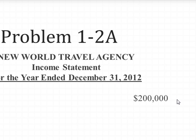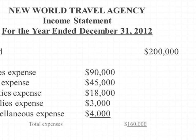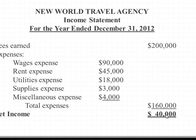If there were any other revenue accounts, we would list those. However, for this particular problem, there's only one revenue account. So next we're going to list the expenses in order of greatest to least, with miscellaneous last. We put wages expense $90,000, rent expense $45,000, utilities expense $18,000, supplies expense $3,000, and miscellaneous expense $4,000. We then total all expenses to get total expenses of $160,000, bringing this out to the right-hand column. Notice that we're aligning the total revenues to the total expenses so we can determine the net income, which is $40,000.